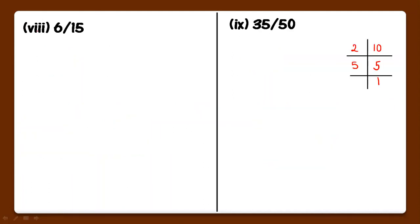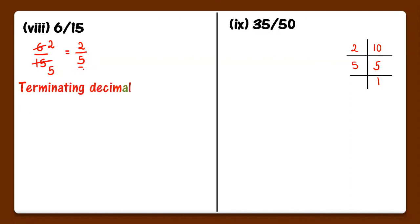8th part: 6 upon 15. They are not co-primes. First we will simplify — dividing both by 3 gives 2 upon 5. Now 5 ki prime factorization mein 5 is already prime, so no need to do further prime factorization. We can clearly see that we have only 5 in the denominator, so it has terminating decimal expansion.